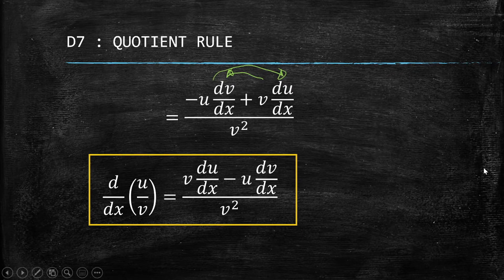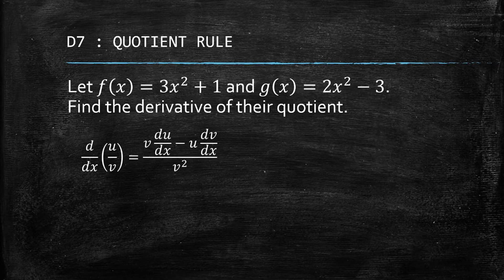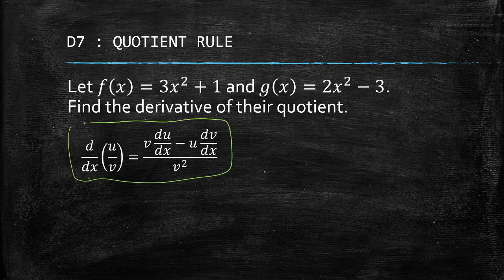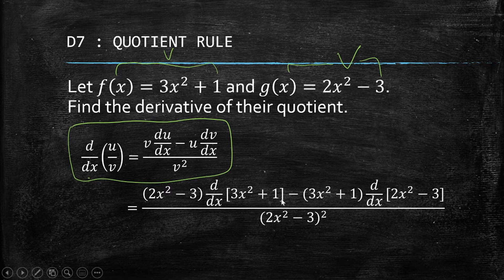Now let's apply this in an example. Suppose we have f(x) equals 3x squared plus 1, and g(x) equals 2x squared minus 3. We're asked to find the derivative of their quotient, and we'll apply the quotient rule formula. Here, u is 3x squared plus 1, and v is 2x squared minus 3.